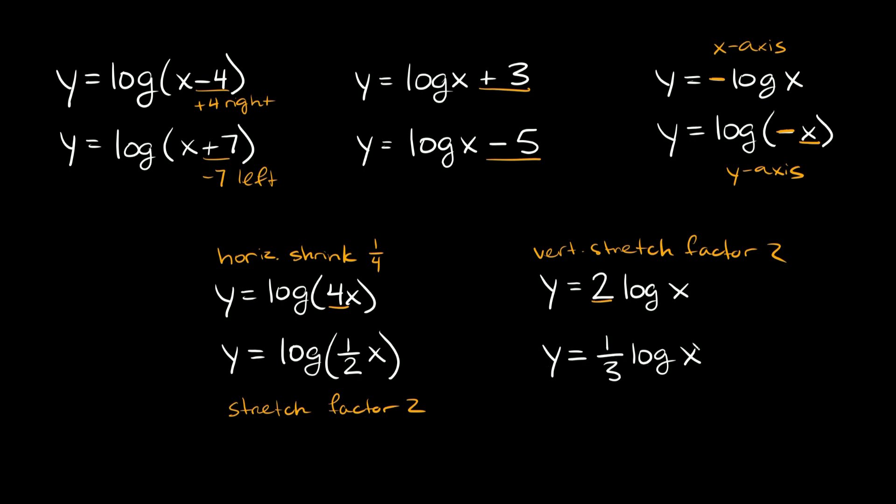And here we have y equals 1/3 times log x. Again, a number out in front indicates vertical. If the number is smaller than 1, that indicates a shrink. So we have a vertical shrink here by a factor of 1/3.